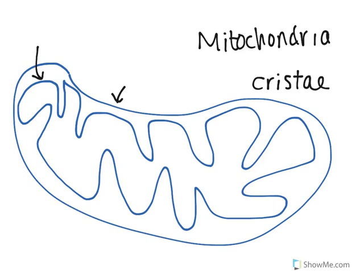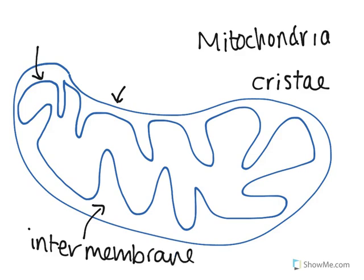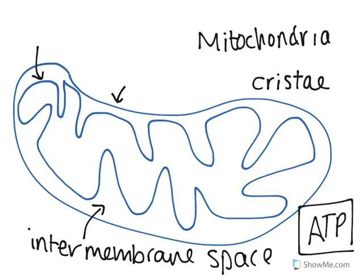So this essentially divides the mitochondria into two different parts. They have here the inner membrane space. So some of the processes of cellular respiration, which is how your body generates energy, or ATP, within the mitochondria, is done within the inner membrane space. The rest of it is done within the mitochondria.